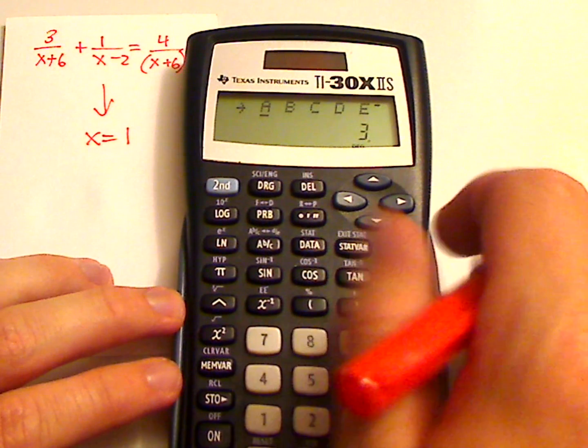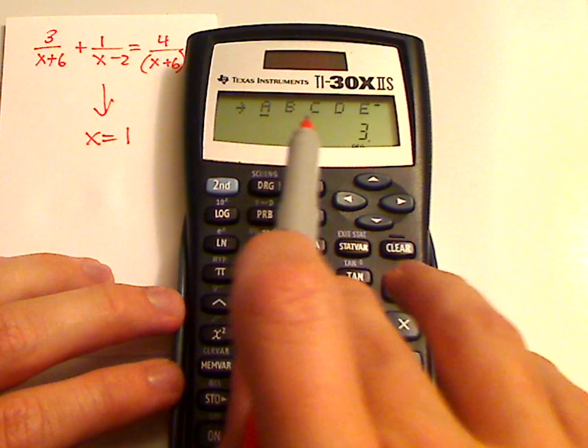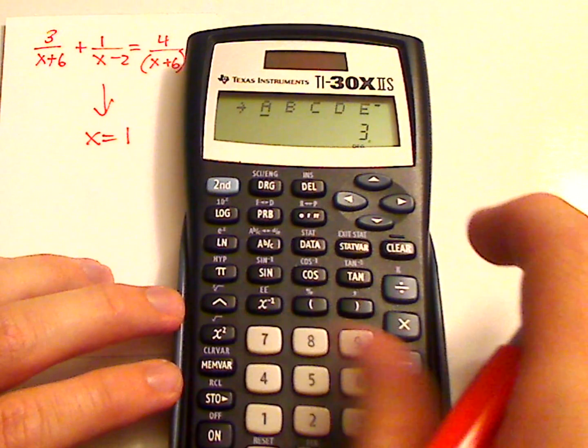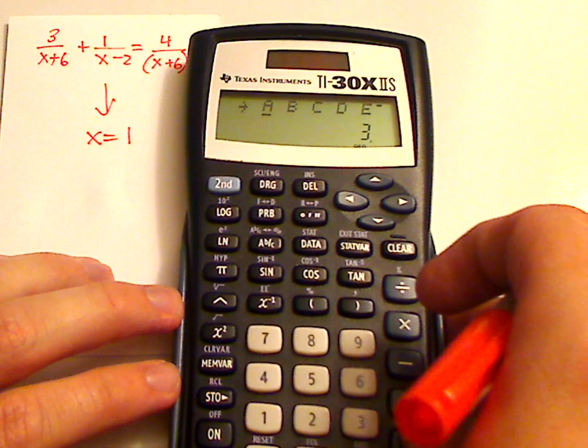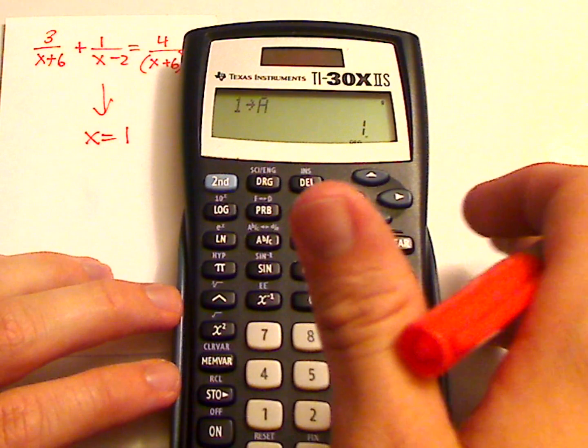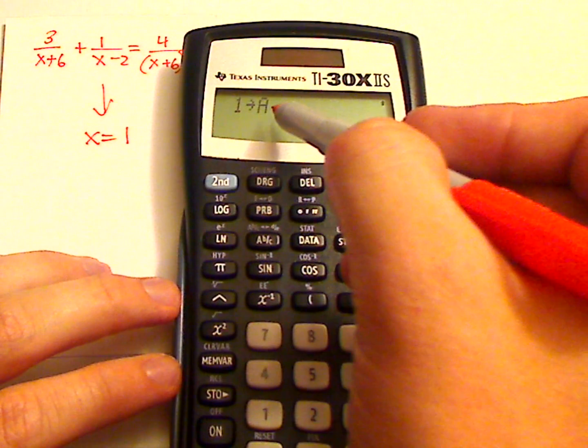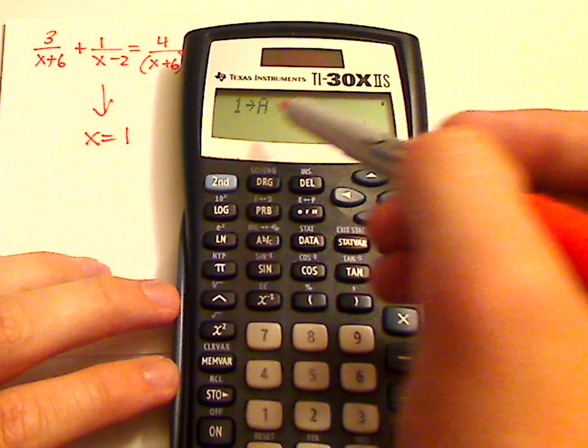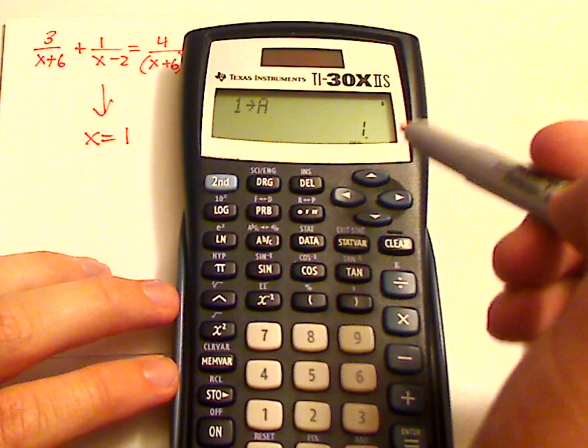It's going to give you a selection of variables: A, B, C, whatever. I just like selecting A because that's the first one. So now one is stored as A. Wherever there's an A, it's going to replace it with a one.